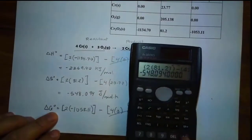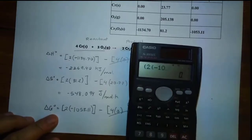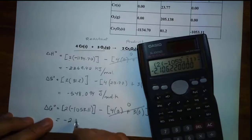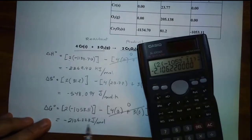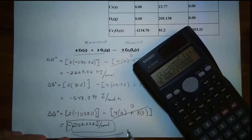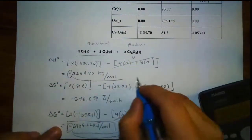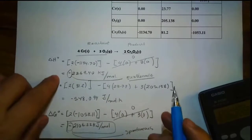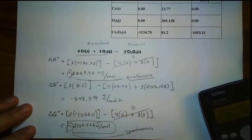So the reactant side equals zero, and our answer is just that part: parenthesis, 2 times parenthesis, negative 1053.11, which gives us negative 2106.22. The unit is kilojoule over mole. Negative delta G tells you we have a spontaneous reaction. And negative delta H tells you it is an exothermic reaction.